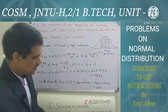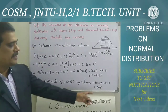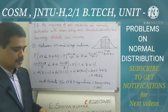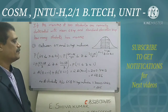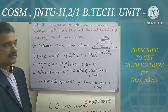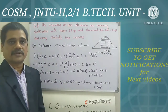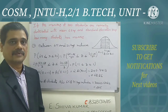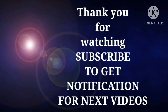Therefore, the number of students between 65 and 71 kg inclusive equals 300 into 0.6826, which gives approximately 205. This is the way of solving the third problem. With this I am closing this video. Thank you.